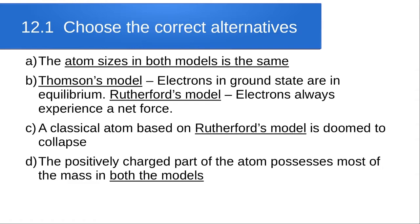Question b: in the ground state of dash, electrons are in stable equilibrium, while in dash, electrons always experience a net force. In Thomson's model (the plum pudding model), electrons in the ground state are in equilibrium, whereas in Rutherford's model electrons always experience a net force.